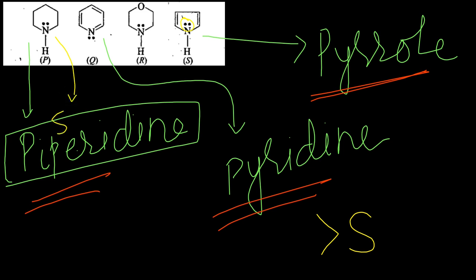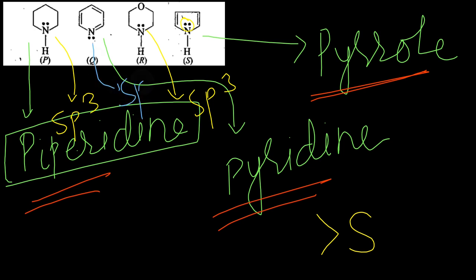The hybridization state of piperidine nitrogen is sp3, and another structure is also sp3. sp3 means the s-character is less. So P and R will more easily donate electrons compared to Q, because in Q the nitrogen is sp2 hybridized - attached to an sp2 hybridized carbon atom.